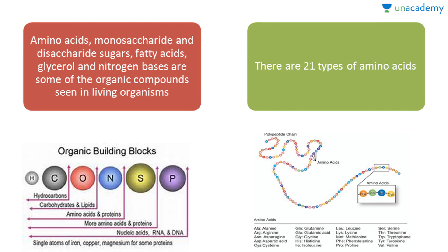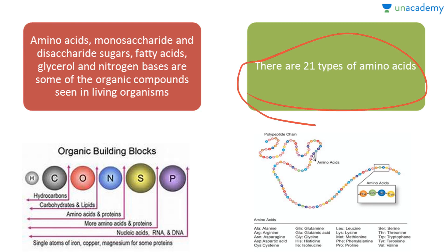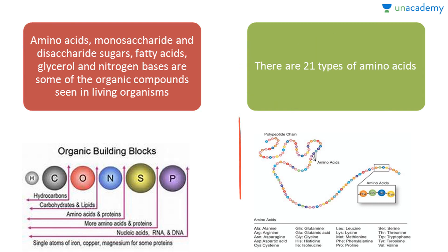Amino acids, monosaccharide and disaccharide sugars, fatty acids, glycerol and nitrogen bases are some of the organic compounds seen in living organisms. There are 21 types of amino acids, as given in this figure.